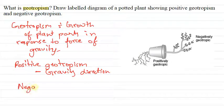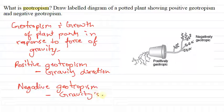Negative geotropism is growth in the opposite direction of gravity.